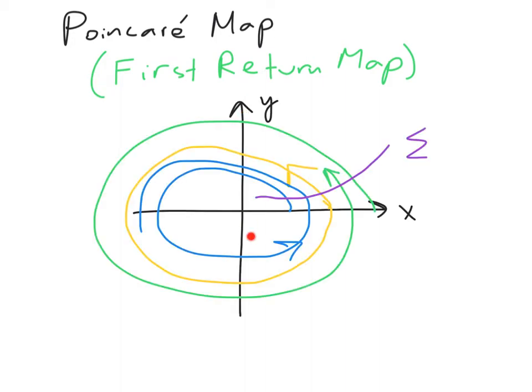Consider the example system that I've drawn here with parts of three sample trajectories. In yellow, we have a periodic orbit. In blue, we have an orbit that appears to be approaching the stable limit cycle. And in green, we have another orbit that appears to be approaching it.